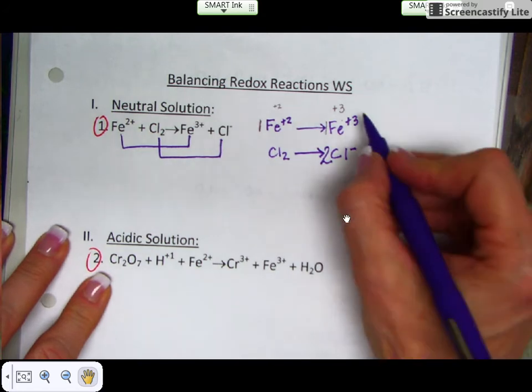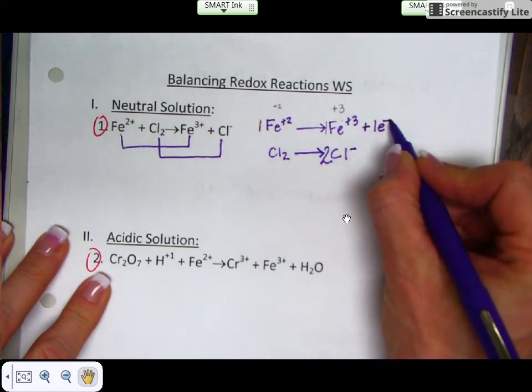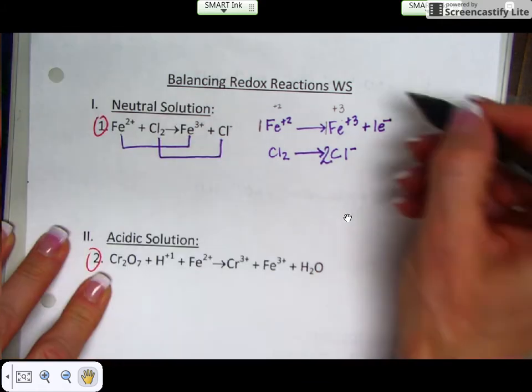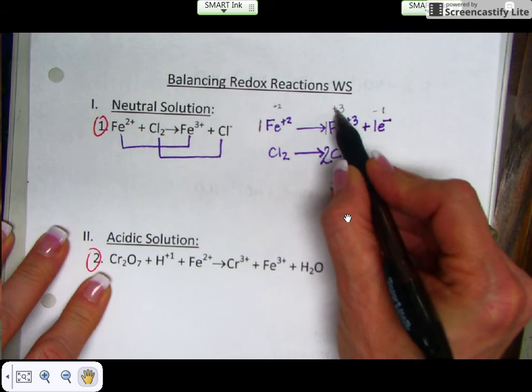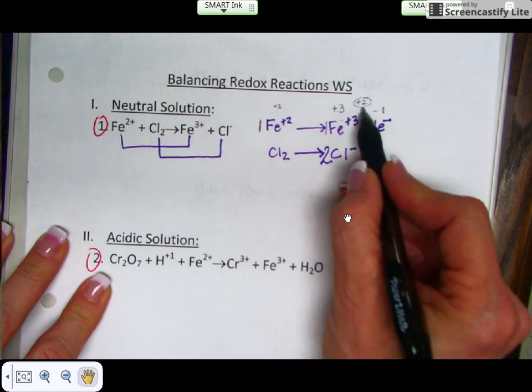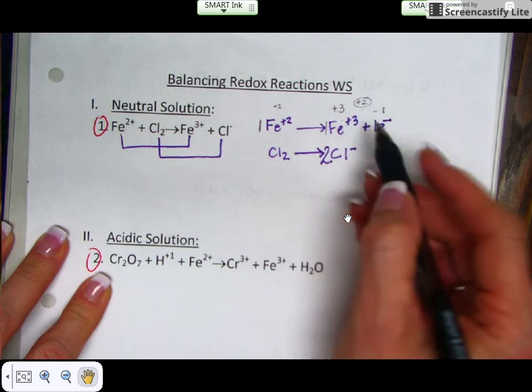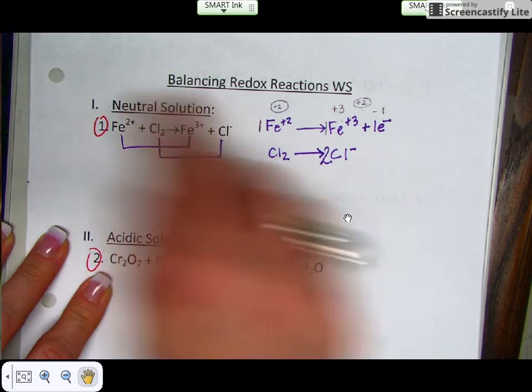Remember, electrons are negative. So in order to get both sides with equal charges, if I add one electron to this side, that would give me a -1, and then +3 and a -1 gives me an overall +2 on this side. Now this side has a +2 charge, and this side has a +2 charge as well. So our charge is balanced in this half reaction.